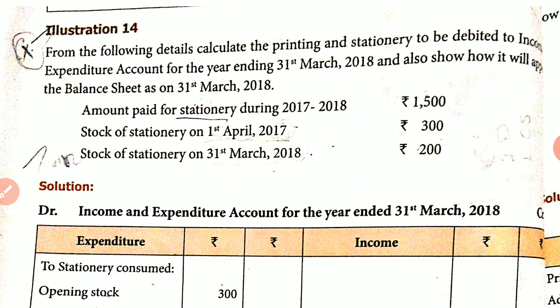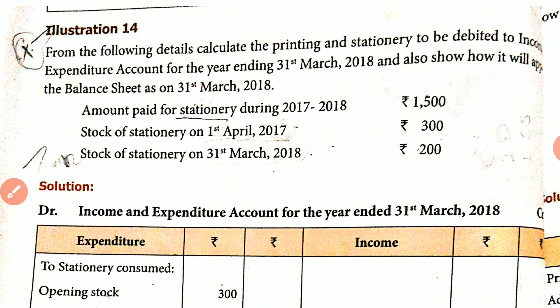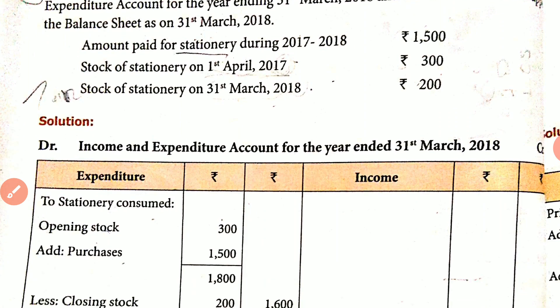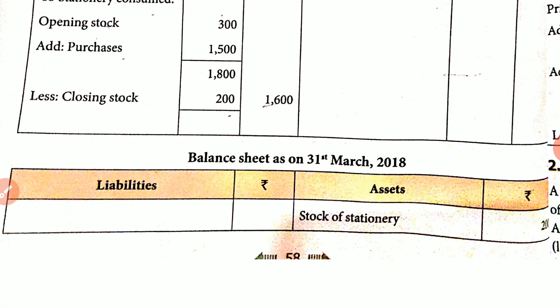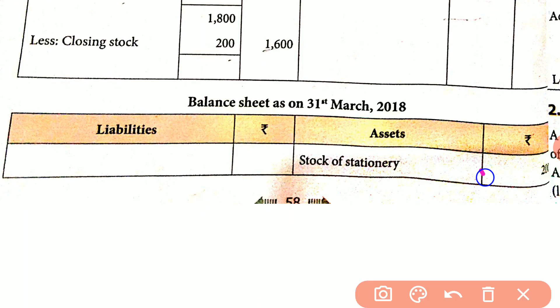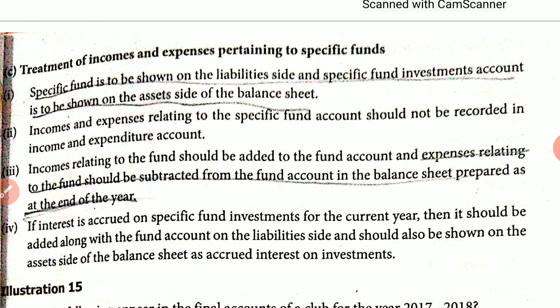Go to the balance sheet. For the balance sheet, the amount paid for the year is the closing balance, plus purchases of $1,500. The closing stock is $1,600 on the balance sheet, and the closing balance stock on stationery is $200.